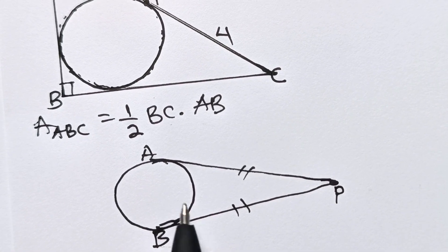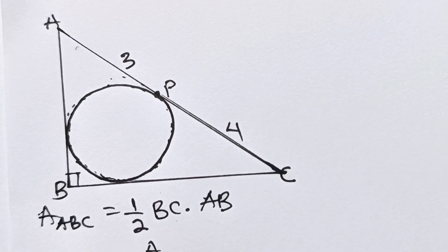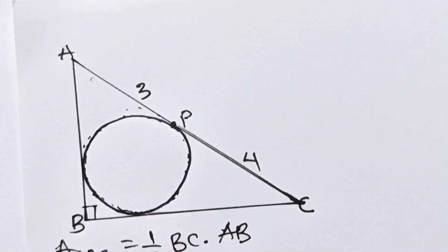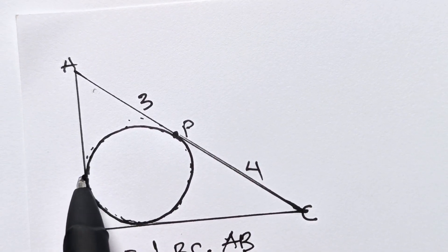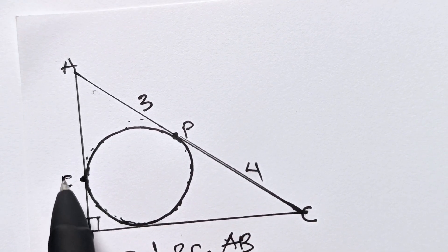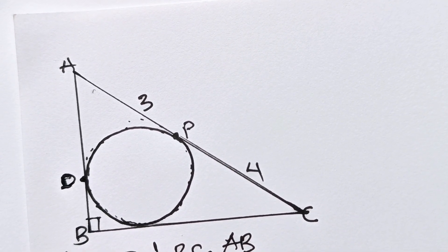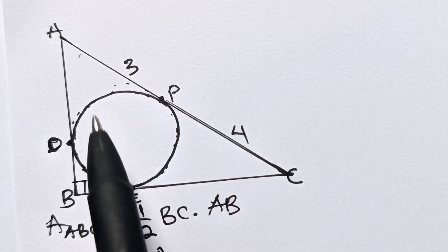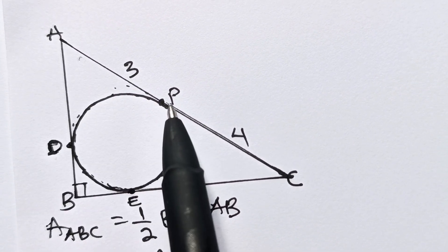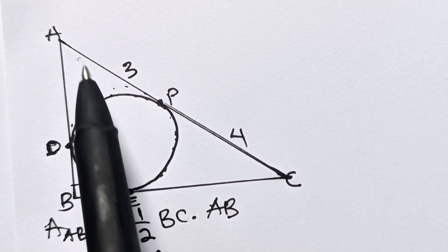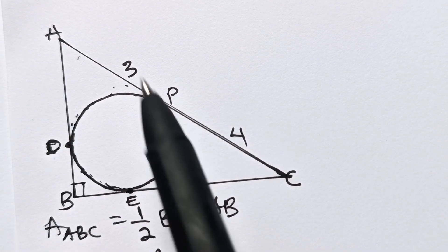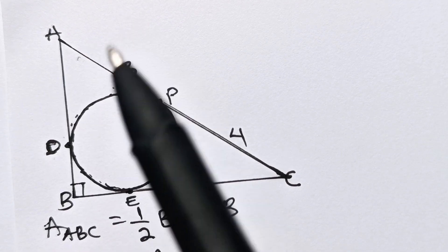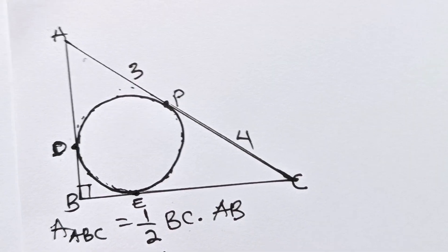Using this particular theorem, let's go back to our diagram. You can see that AP and — let's call this point D — AD and AP are tangent to this circle, and their meeting point is A. So it simply means that AP should be equal to AD.